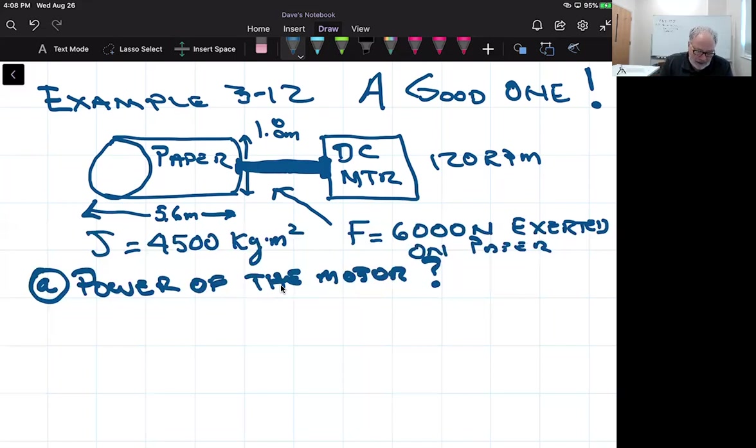It's driven by a directly coupled variable speed DC motor, turning at 120 RPMs, and there's a constant force, a constant tension of 6,000 newtons exerted on the paper. So regardless, this reel is changing size as it gets larger and more paper accumulates on it, but it's important that we maintain the same tension on that paper so that it doesn't tear through that process. That's being monitored, and it's set to be 6,000 newtons.